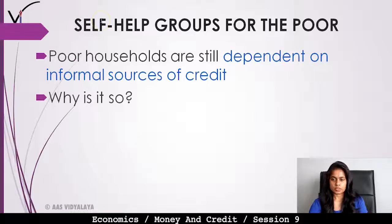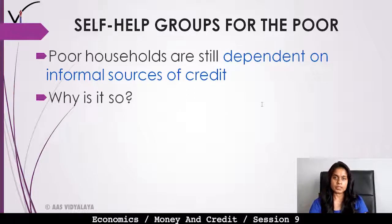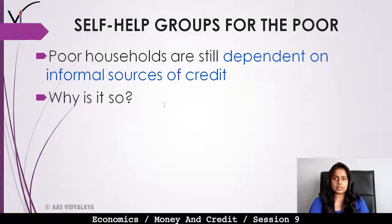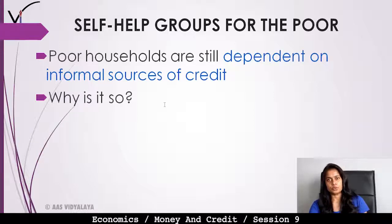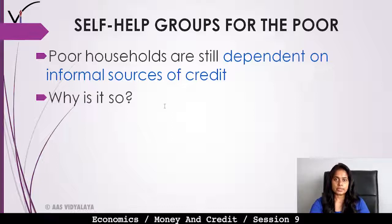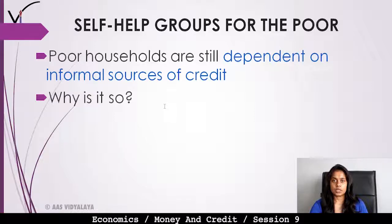In this session we are going to discuss about the self-help group for the poor. Poor households are still dependent on informal sources of credit — informal sources like money lenders, traders, relatives, or friends.